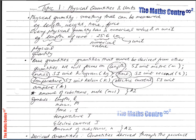So, what is a physical quantity? Anything that can be measured is referred to as a physical quantity. Examples include length, weight, time, and force — these are known as physical quantities because they can be measured. Every physical quantity has a numerical value and a unit.